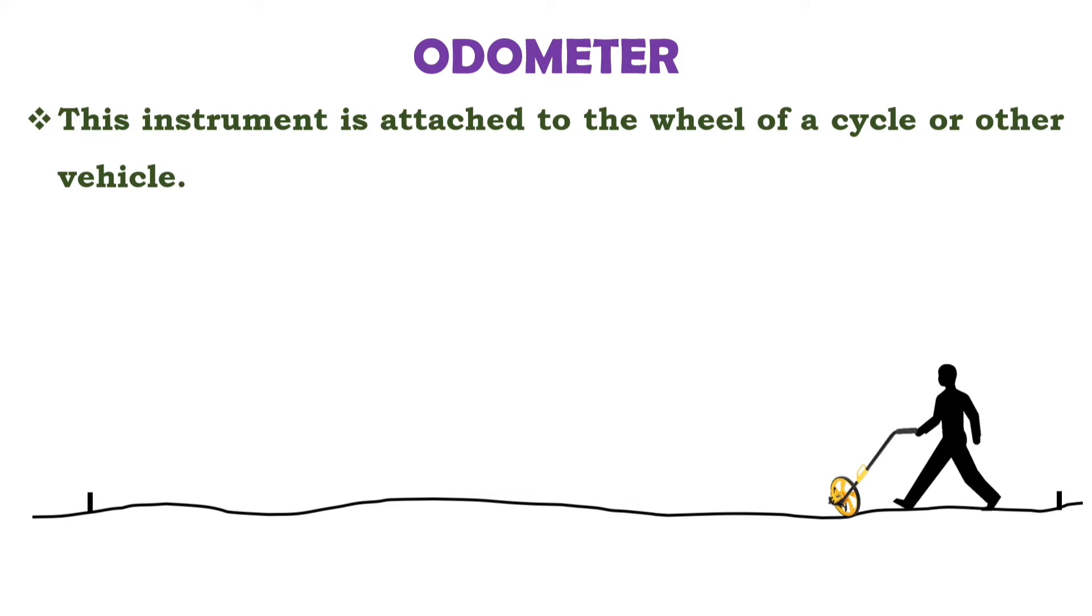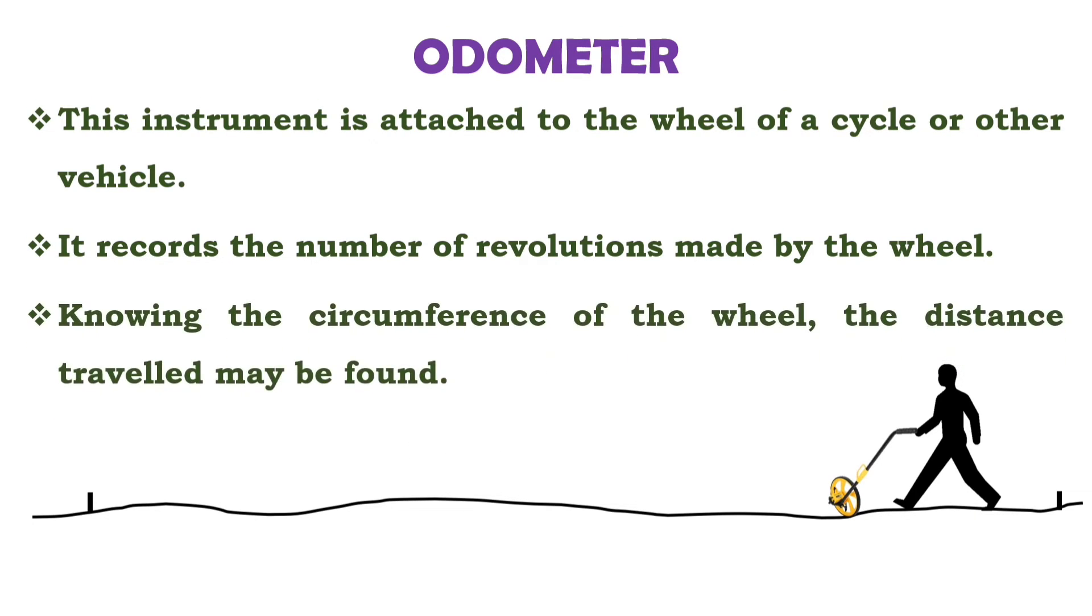The next method is odometer. This instrument is attached to the wheel of cycle or other vehicle. Here you can see a small instrument is attached here with the wheel. This instrument records the number of revolutions made by wheel. By knowing the circumference of wheel, the distance traveled may be obtained.